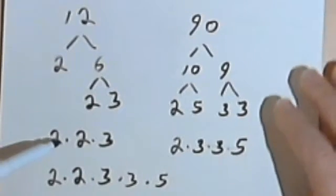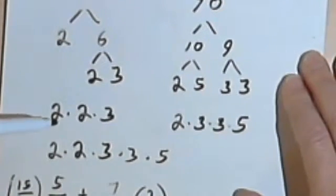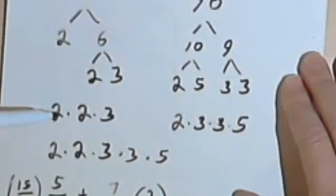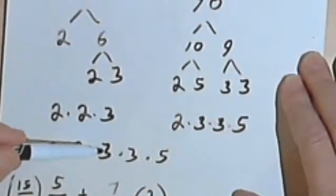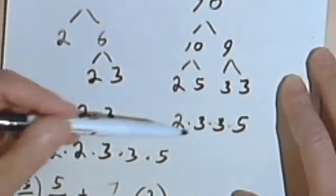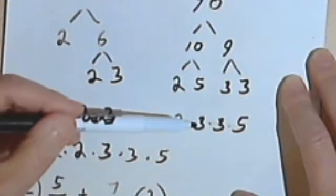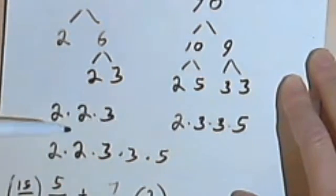Then I made a common denominator by taking all the factors in the first denominator, the 2 and the 2 and the 3, and also including all of the factors in the second denominator that weren't in the first one.